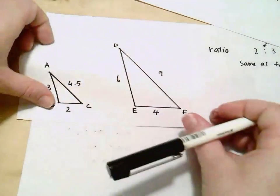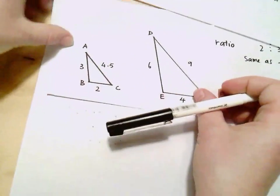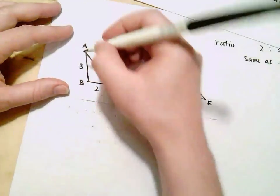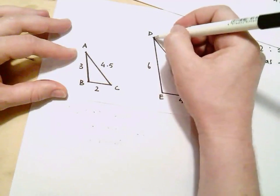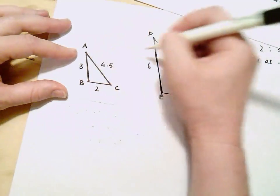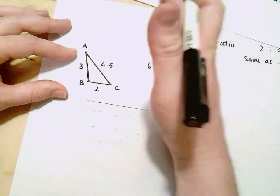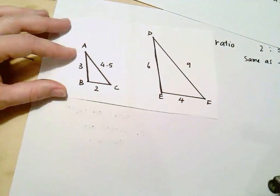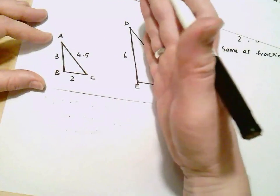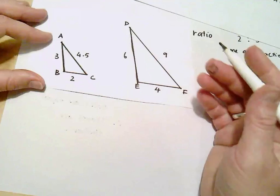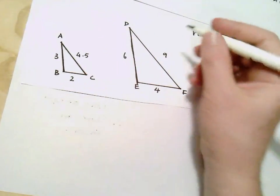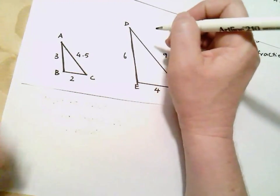So I've got to look at my matching pairs. In this particular case, I look at AB and I look at DE. They're the matching sides. So they're in the same location on both triangles. And so I look at the ratio of one of those sides to the other side.